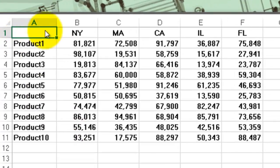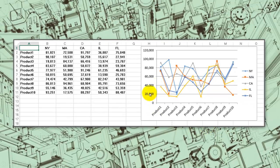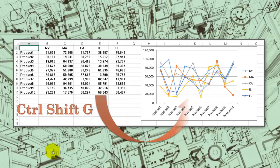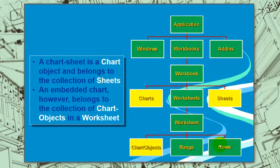Now the chart. We have a simple table to the left, and to the right is the chart we created. We are going to ask the user: do you want it on the same sheet as where the database is, or on a separate sheet? We use Ctrl-Shift-G to automatically create that chart. A separate sheet is a chart object that belongs to the collection of sheets, but an embedded chart belongs to the collection of chart objects, which are part of the worksheet hierarchy. Charts are in the collection of sheets in the workbook; chart objects belong to a specific sheet.